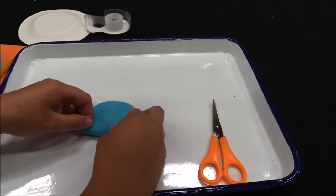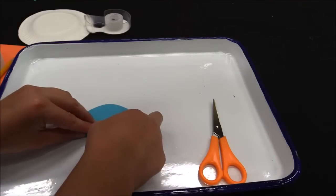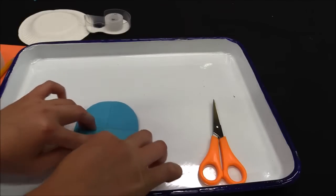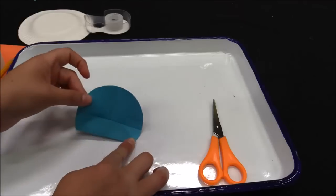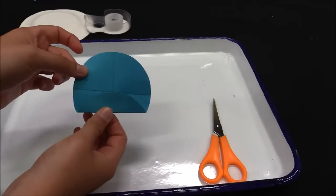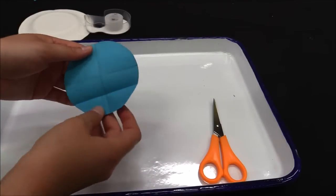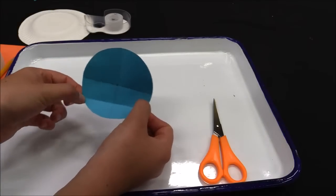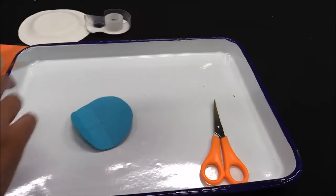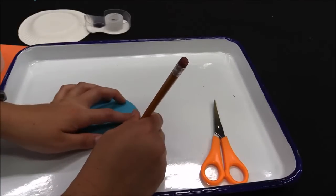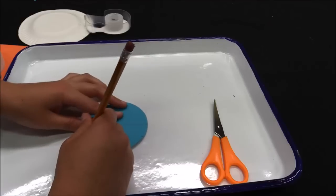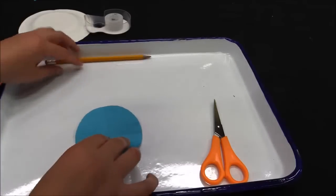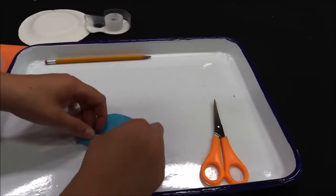The first fold is you are gonna try to fold the edge of your circle into the center of your circle. Like that. And then you're gonna unfold it and see where this fold touches the edge of the circle. That's where you're gonna make a little mark with your pencil. Just a little one. You're gonna come back to it again.